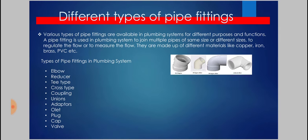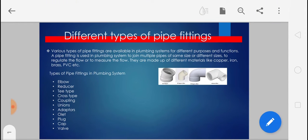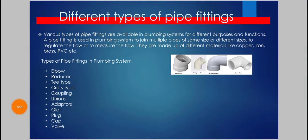The first type is the elbow. Elbows are used to change the direction of flow between two pipes. Elbows are generally available with an angle of 22.5 degrees, 45 degrees, and 90 degrees. If the pipes are of the same diameter then normal elbows are used; otherwise reducer elbows are used.